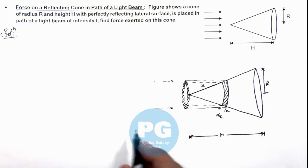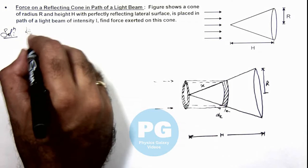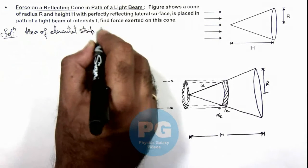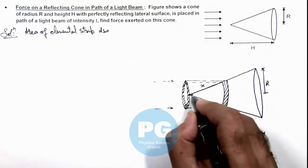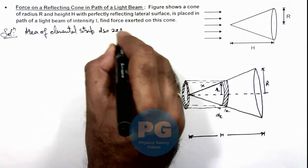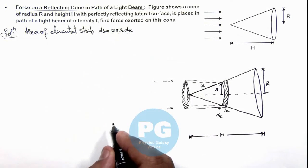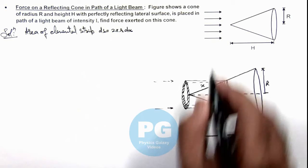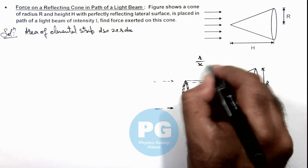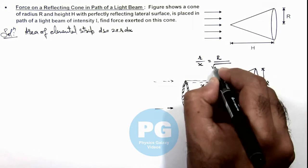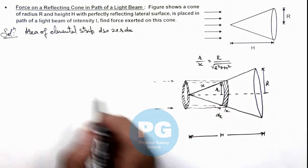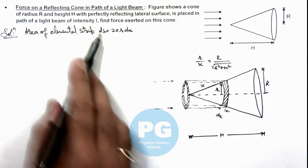So we first calculate the area of the elemental strip. This area dS we can write as 2πr·dx, where r is the radius at that point. The value of r we can easily calculate using similarity: small r / x = capital R / √(R² + h²), using the similar triangles. So we get the value of the area of this elemental strip.